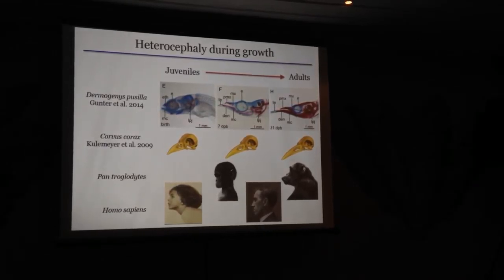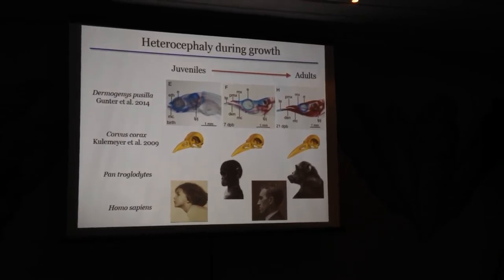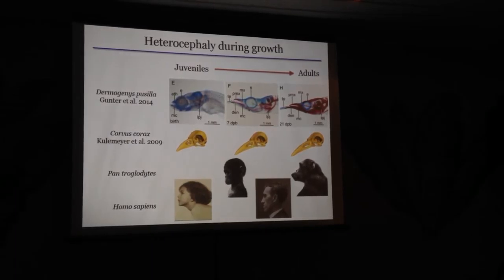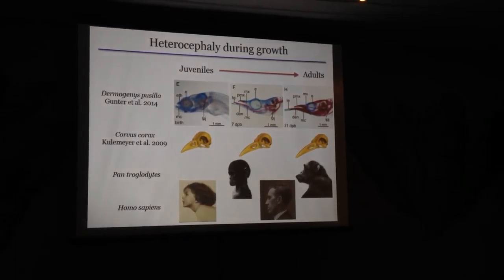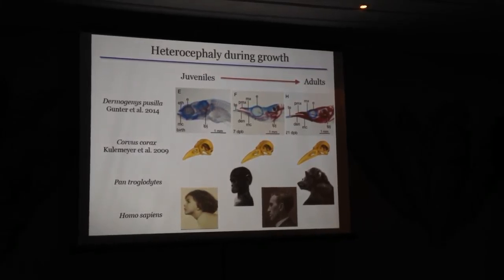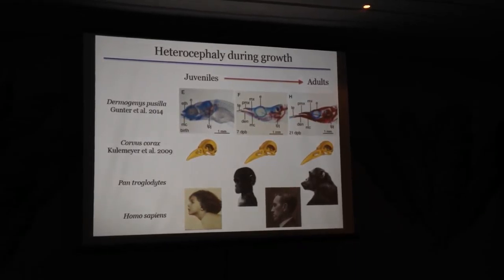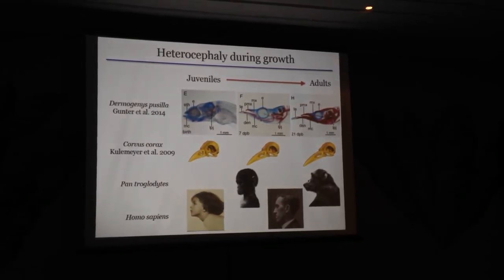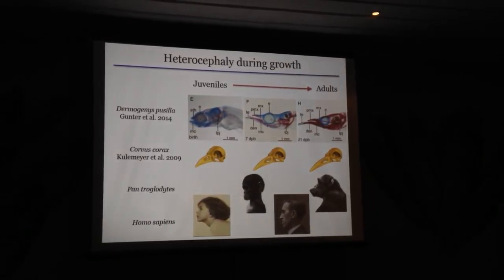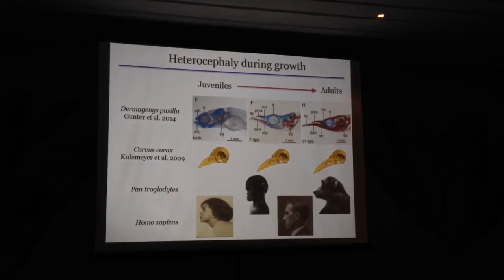Here are some examples of that growth pattern in different vertebrates. A really good paper looking at genetic expression in a half-beak during development. A paper by Kuhlmeyer looking at development in crows. And people in those fields will be very familiar with the various ways in which anthropoid apes develop — with humans experiencing less dolichocephaly than their other relatives, and with some variation within humans — because dolichocephaly was first named in humans in another context.